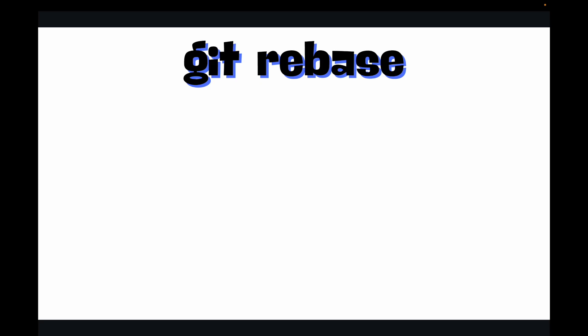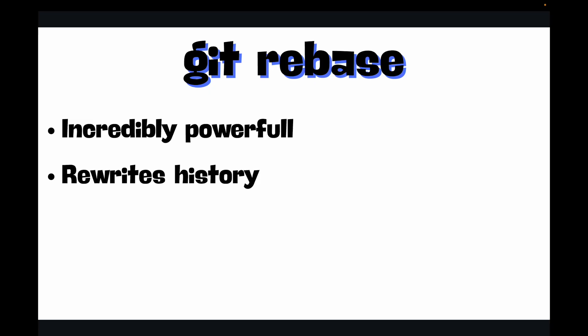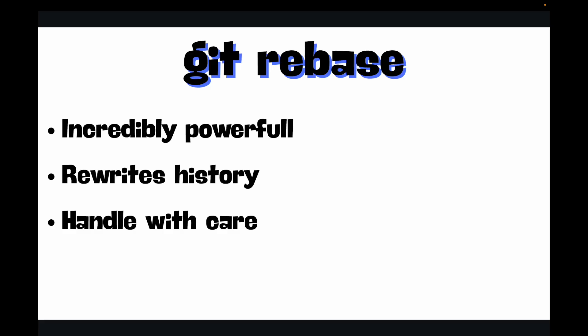I have to give you a strong warning up front: git rebase is incredibly powerful, but it also rewrites history. It's a tool you must handle with care, like a sharp scalpel. Using it incorrectly can cause a lot of headaches for you and your team. But using it correctly — especially on your own local branches — will make your project history a joy to read. We will cover what it is, how it works, the golden rule of when to use it, and how to resolve conflicts.